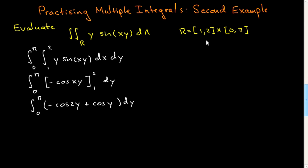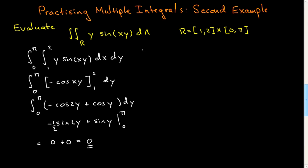Alright, I've done my inner integral. It remains to do the outer integral — I now have two easy things to integrate. The integral of cosine(2y) is sine(2y) times one-half, so that's minus sine(2y)·(1/2), plus sine(y), evaluated from 0 to pi. At 2pi that gives you 0, plus 0, so the answer is simply 0.